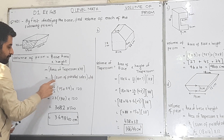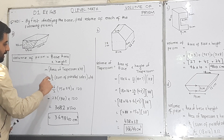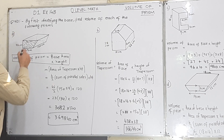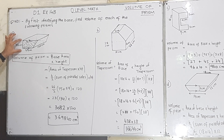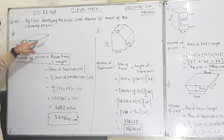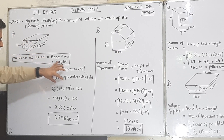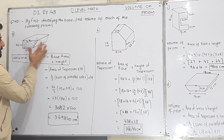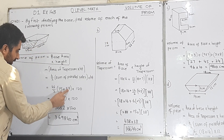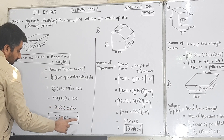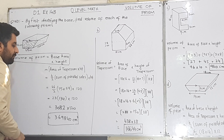The area of a trapezium is h/2 multiplied by the sum of parallel sides. The height of the trapezium, which is the perpendicular distance between the parallel sides, is 46. So: 46/2 × (75 + 59) × 120, where 120 is the height of the prism. Simplifying: 75 + 59 = 134, then 134 × 23 = 3082, and 3082 × 120 gives a volume of 369,840 cm³.